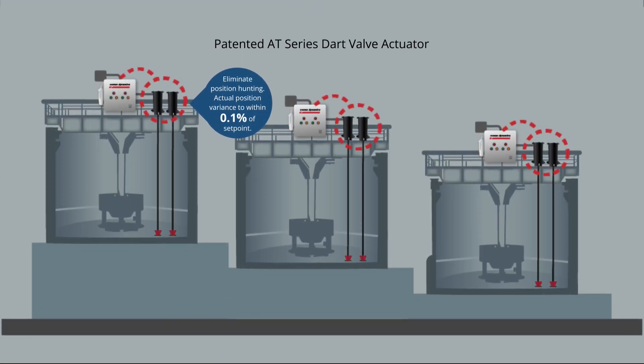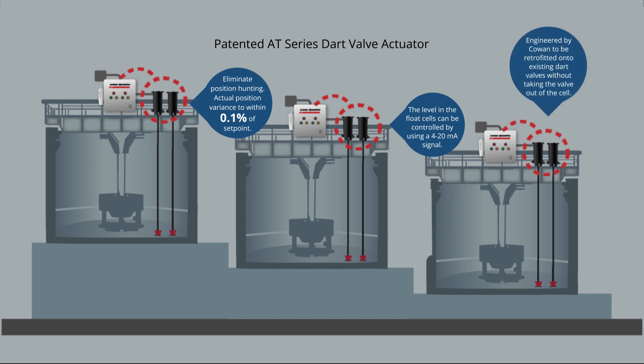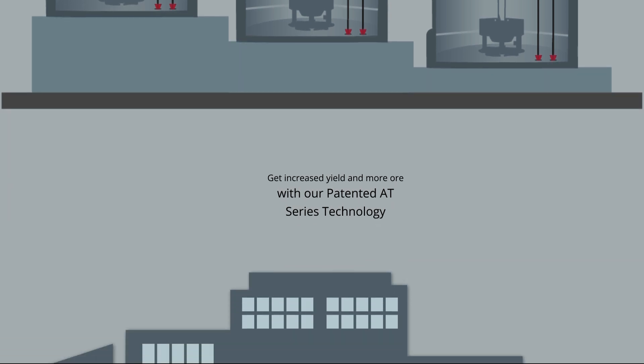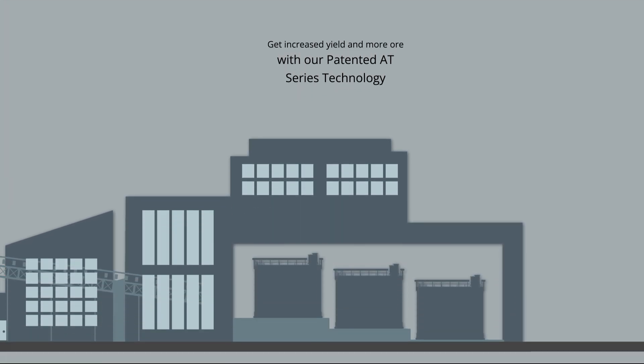Eliminate position hunting. Actual position variance to within 0.1% of setpoint. The level in the float cells can be controlled by using a 4 to 20 milliamp signal. Engineered by Cowan to be retrofitted onto existing dart valves without taking the valve out of the cell. Get increased yield and more ore with our patented AT series technology.